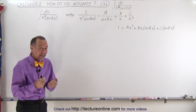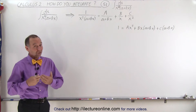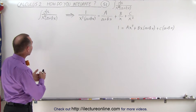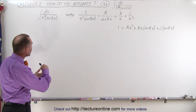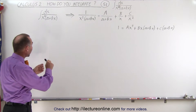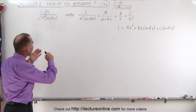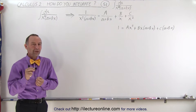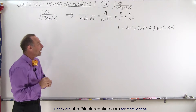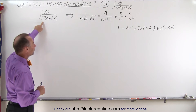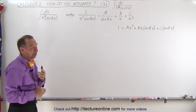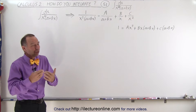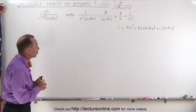Your first inclination may be, just like it was for me, to do the substitution trick — to let a plus bx equal u, then solve for x and plug all that in. But when you try to do that, you find out you end up with a polynomial in the denominator to the third power, and that becomes very difficult to integrate. So you're really not any further ahead by using that substitution method.